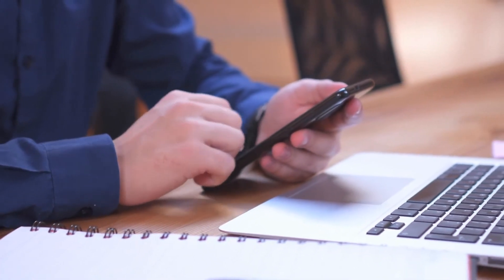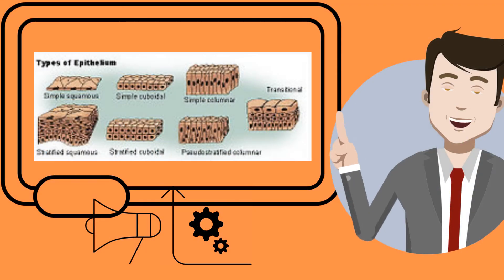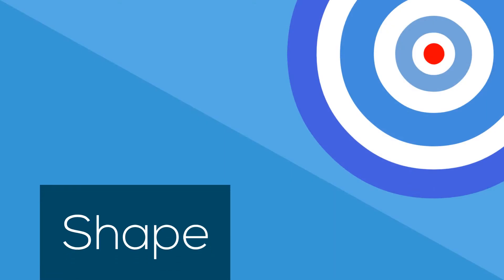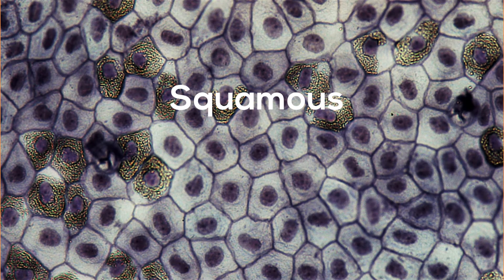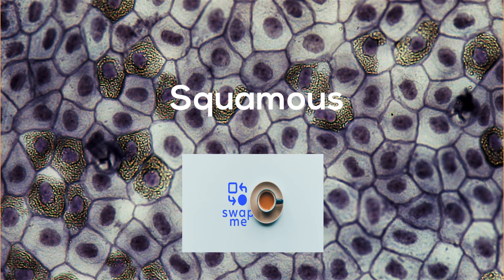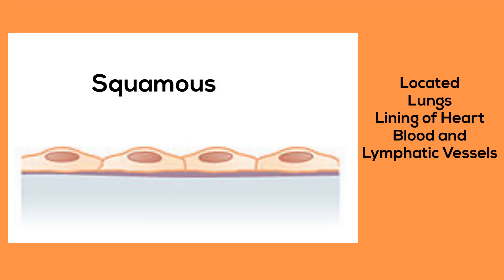Epithelial tissues can be divided into several different types and can be classified by both their shape and their number. First you have squamous. Squamous are like pancakes — their width is greater than their height. You will find these in areas of exchange like your lungs and stomach.